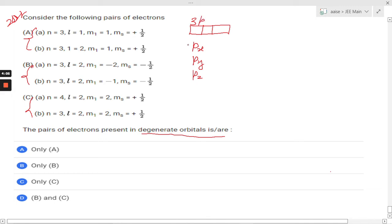So these 3px, 3py, 3pz orbitals are degenerate orbitals. Why? Because they are having n equals to 3 and l equals to 1, so n and l is same for these orbitals. So if these types of orbitals are there, then that will be known as degenerate orbitals.